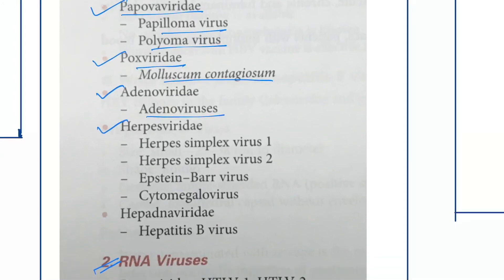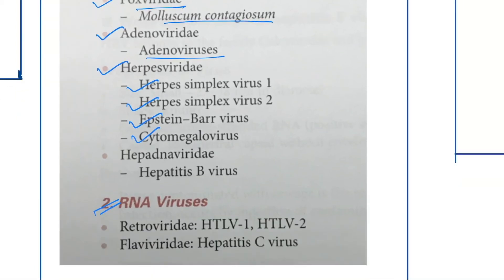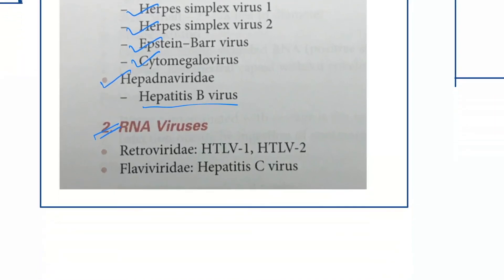Herpesviridae family — viruses are herpes simplex virus 1, herpes simplex virus 2, Epstein-Barr virus, and cytomegalovirus. Hepadnaviridae family — hepatitis B virus. For RNA oncogenic viruses: Retroviridae — HTLV-1 and HTLV-2; and Flaviviridae — hepatitis C virus.